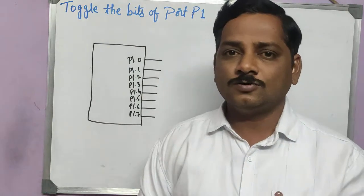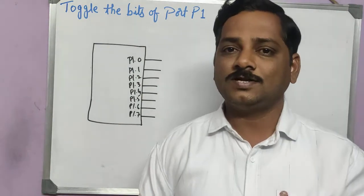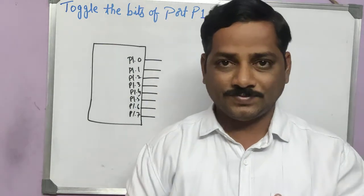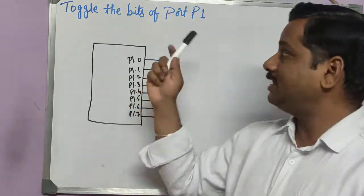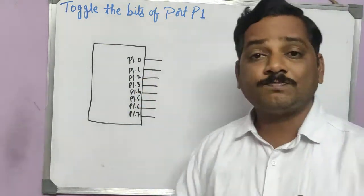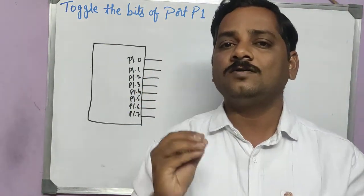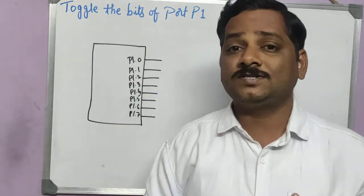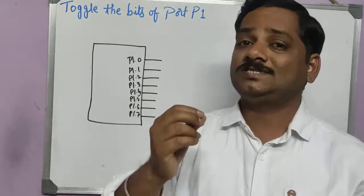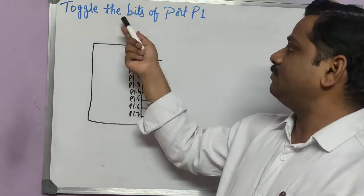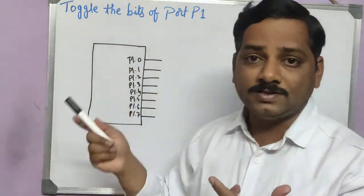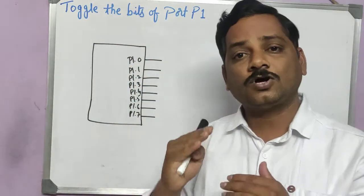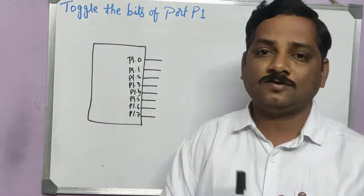As you all know, there are four ports in the microcontroller: P0, P1, P2, and P3. They are just talking about P1, and you have to toggle all the bits of P1. In the question they have not mentioned whether it's all bits or just an individual bit. As they have mentioned 'bits', it is clearly understood that we have to toggle all the bits of port 1.